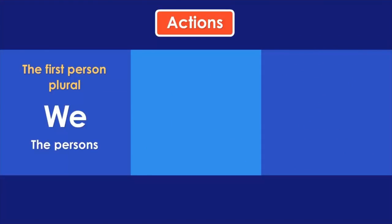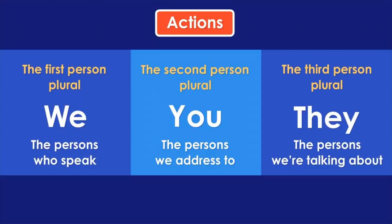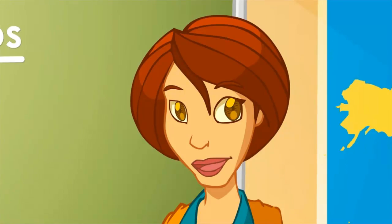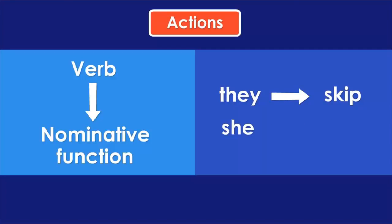The first person plural is 'we,' because we are the ones who speak — the ones telling about skipping the rope. 'You' expresses the persons we address. And 'they' is who we're talking about. Always bear in mind that subjective pronouns are used as the subject of the verb — in a nominative function. If I say 'they,' the verb will be 'skip.' If I say 'she,' the verb will be 'skips.'